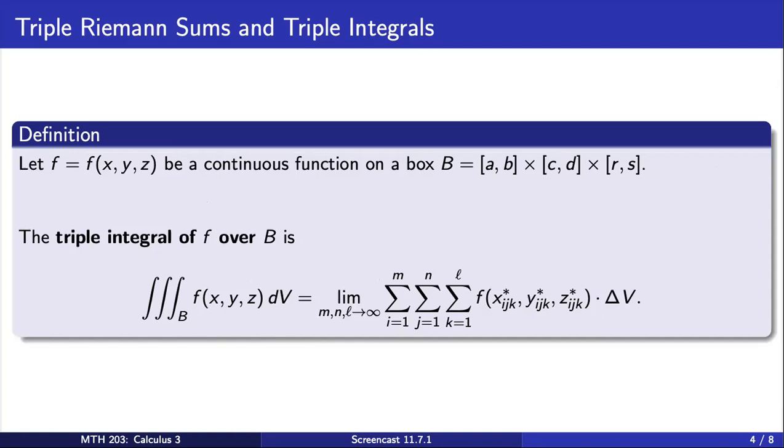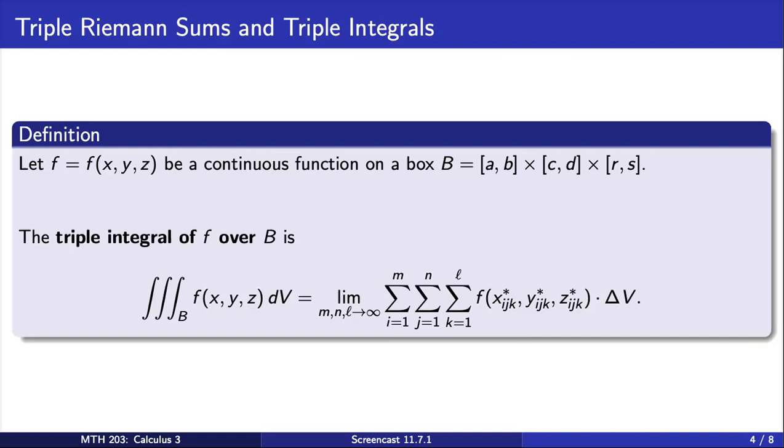Now that we've defined the triple integral, let's quickly review some interpretations of the triple integral that extend from our work with double integrals. First, if f is the density function for a three-dimensional solid B, then the triple integral of f gives us the mass of B.